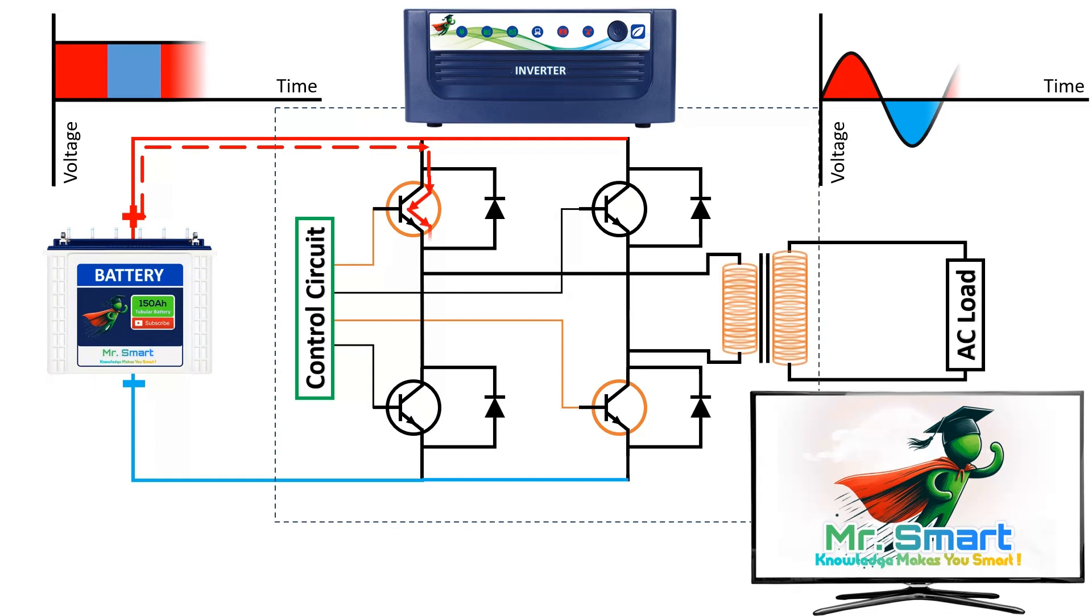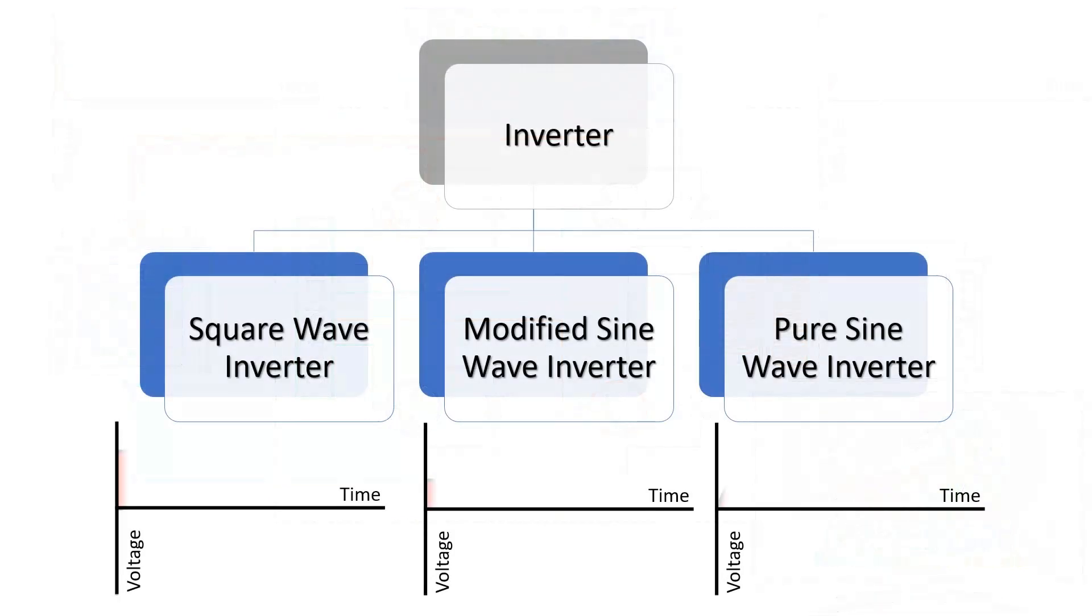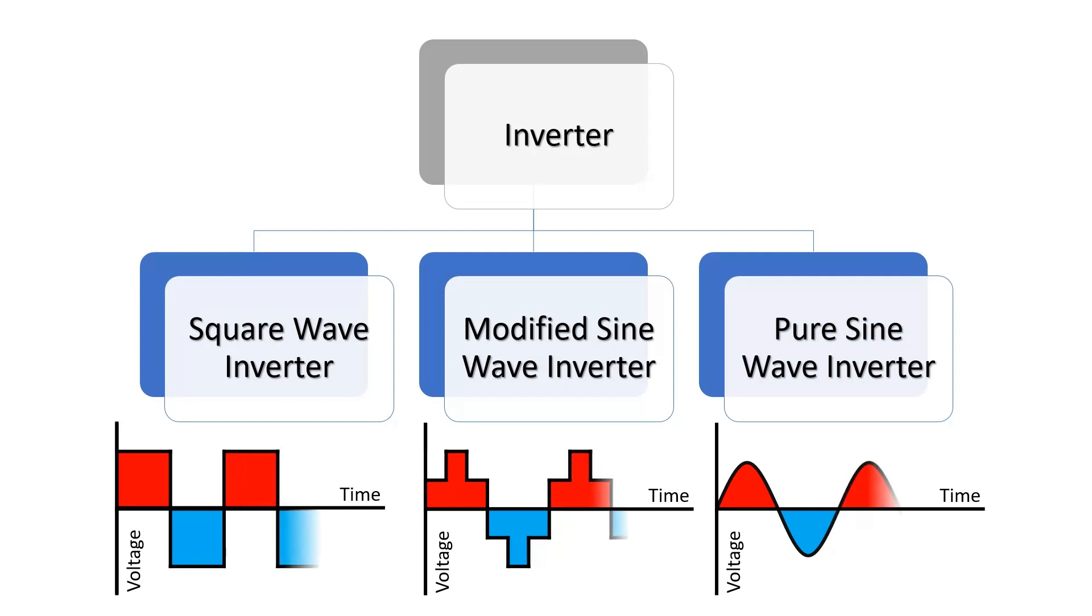But not all inverters are created equal. The type of wave they produce affects what they can power. Based on the type of output wave they produce, inverters are classified into square wave inverter, modified sine wave inverter, and pure sine wave inverter.